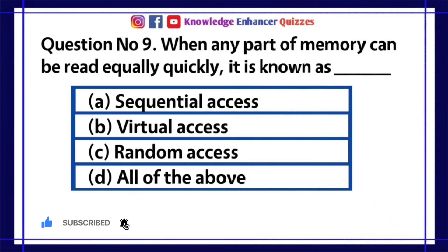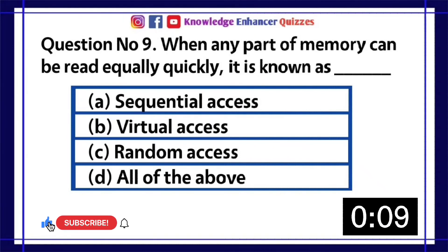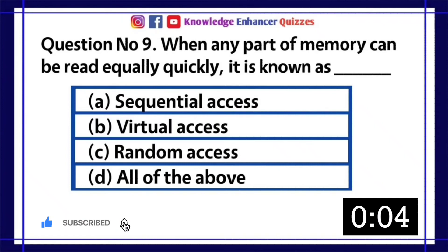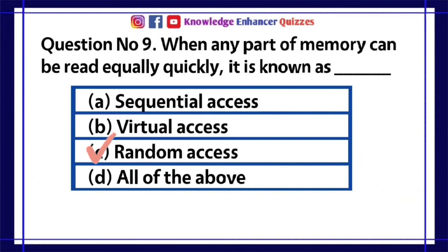Question number 9. When any part of memory can be read equally quickly, it is known as dash? A. Sequential access. B. Virtual access. C. Random access. D. All of the above. Option C is the right answer.